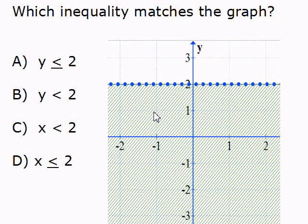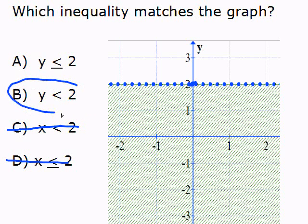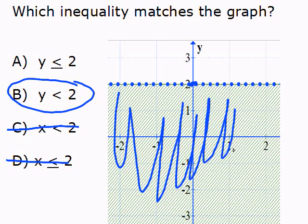Here's another one for you to try on your own. Please work it out, pressing pause and then play when you're ready to see the answer. For this one, we notice that the line is going through the y-axis at 2. Since it's hitting the y-axis and it is a horizontal line, we know that it has to be y is less than or y is greater than, so we can immediately cross out answer choices C and D. Since it is a dashed line, we know it has to be y is less than 2, which matches because we're shading all values below 2 on the y-axis.